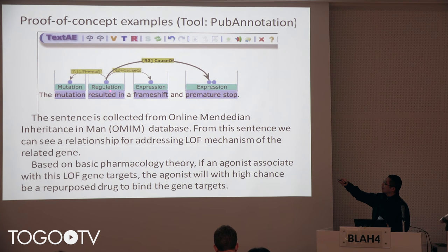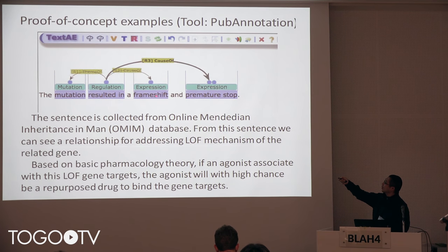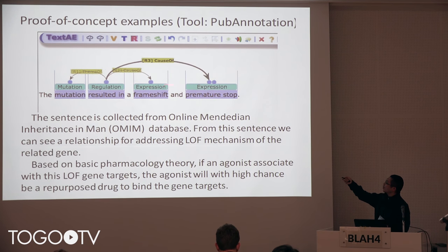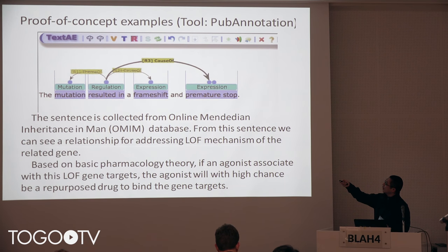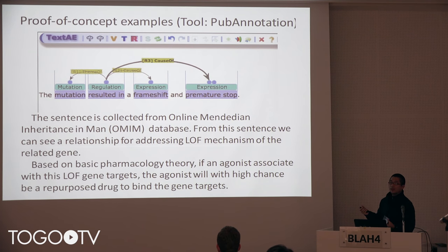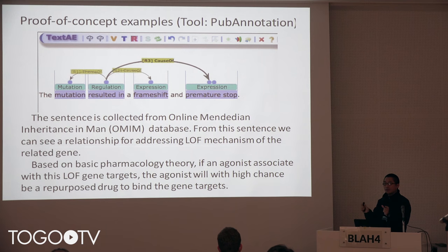The verb will always serve as the root in the dependency tree. For this word, we annotate it as a regulation trigger, and for the mutation entity, it is annotated as mutation. The phrase related to the central dogma is annotated as expression. So we can find the cause and effect. This is very similar to GENIA. We find a relationship triplet and identify entities in their relationships.